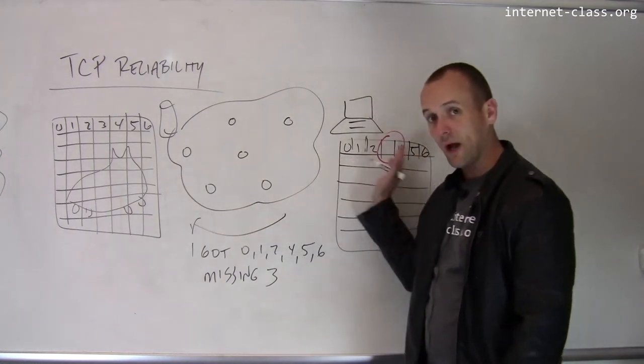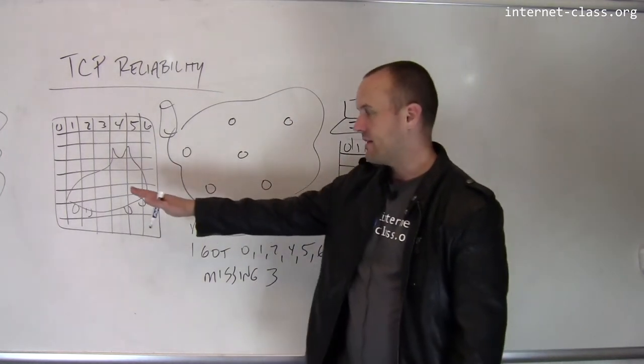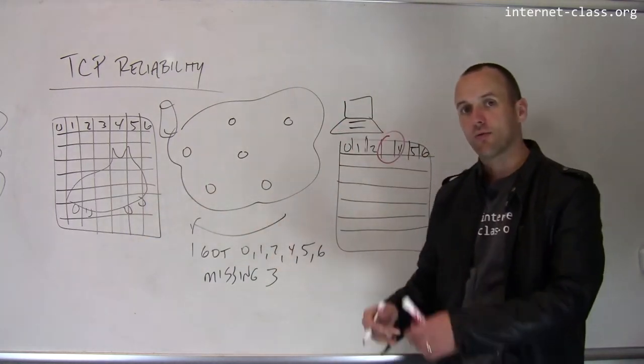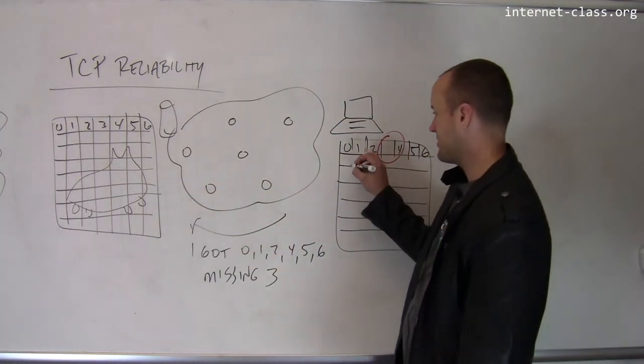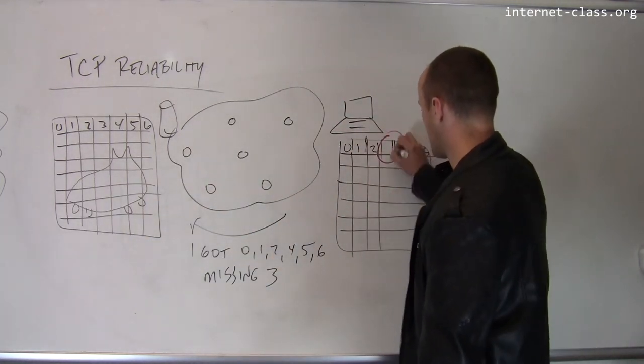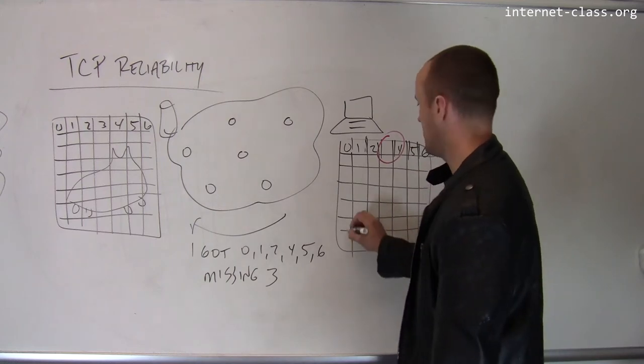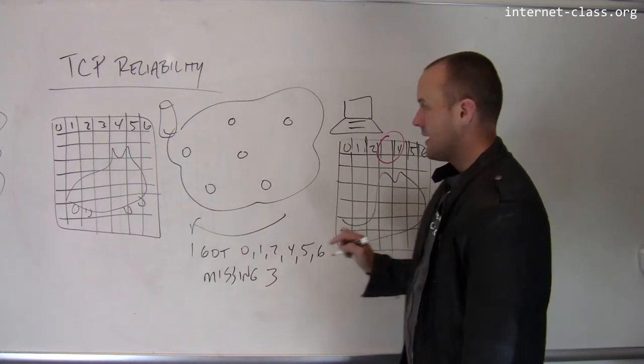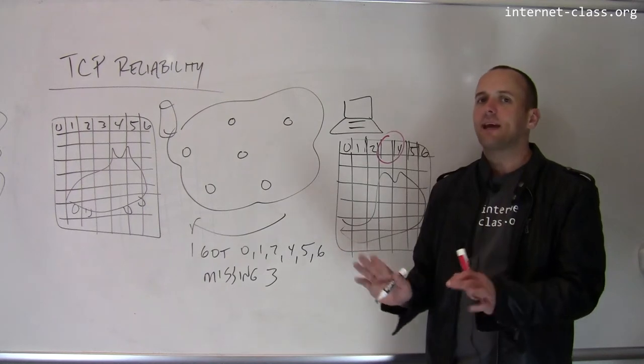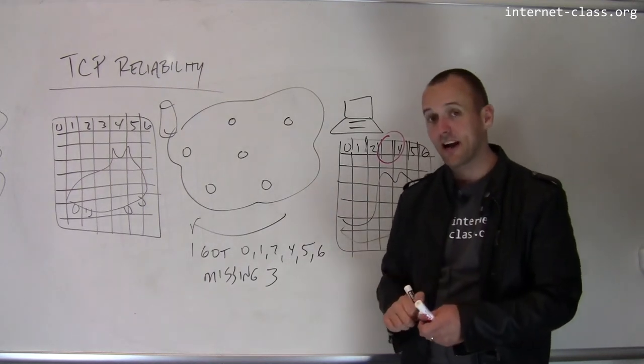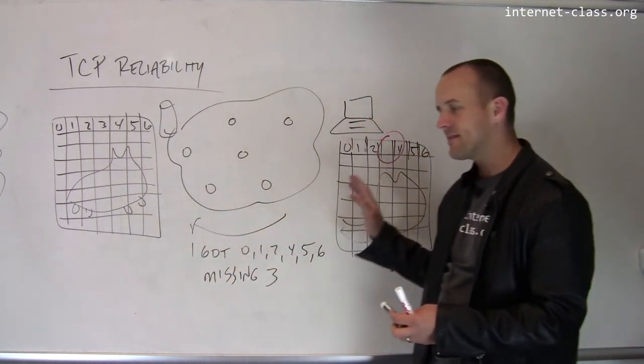So in successive rounds of this protocol, the sender will, as needed, retransmit parts of the image that are lost until the receiver has the entire image. Now this TCP, the internals of how TCP works, are actually quite complex. But this is the basic principle.